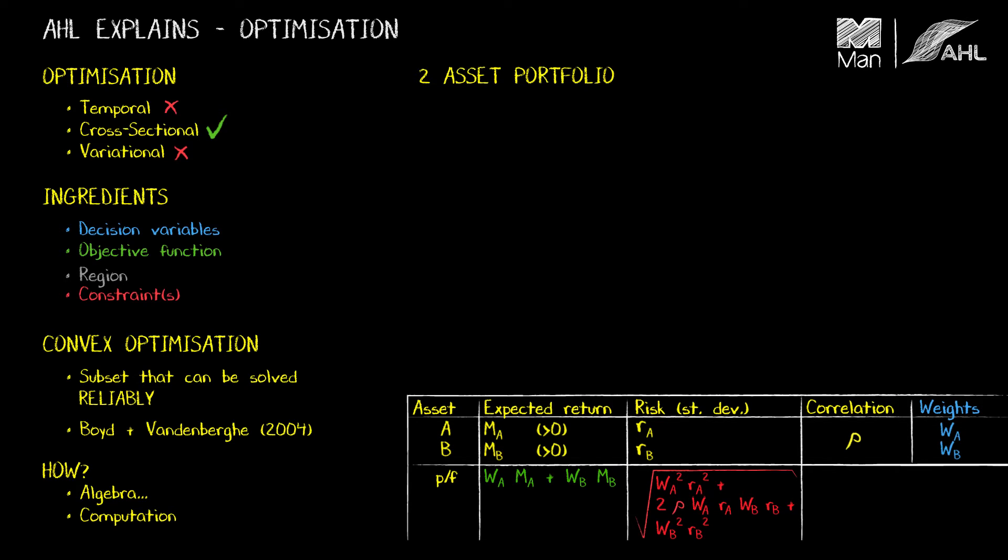Okay, now I've got what I need to set up the optimization problem. So what I'm going to do is choose weights WA and WB in order to maximize the portfolio expected return subject to the portfolio risk being constrained to be less than or equal to R-lim. And the region I'm going to search over is WA greater than or equal to zero and WB greater than or equal to zero. That is, I'm not going to allow any shorting in this portfolio.